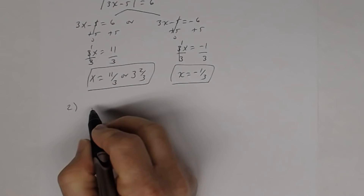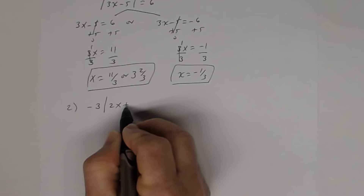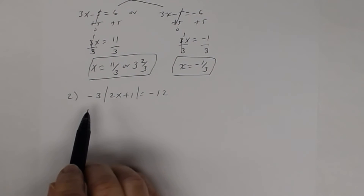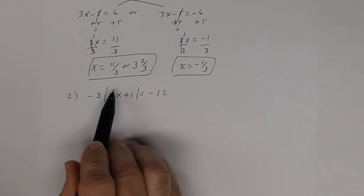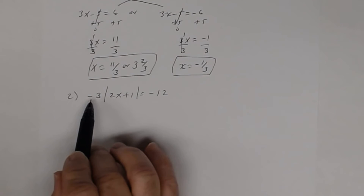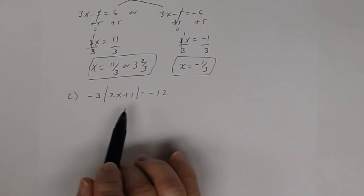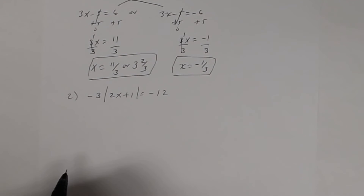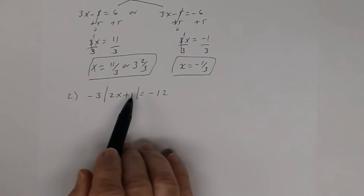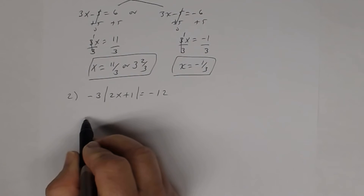Number 2: we have negative 3 times the absolute value of 2x plus 1 equals negative 12. Be careful — many students see this and think of it as parentheses and want to distribute. This is a negative number, and if you distribute it in here and rewrite into two separate equations, you will not get the correct solutions. This is not parentheses, so do not distribute the negative 3.